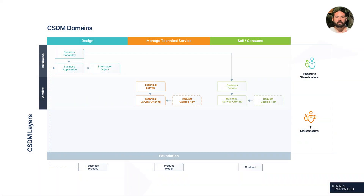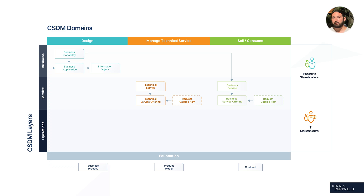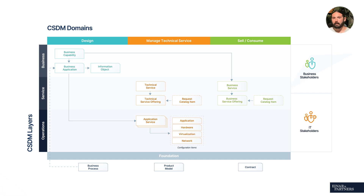Understanding service offerings helps align the services provided with the specific requirements of different business units and operational teams. These offerings also create a bridge to the next layer, the operations layer. This layer focuses on deployment, management and daily operations of IT services, ensuring they are reliable, secure and efficient. Operational CMDB records are extensive but can be categorized — though not limited to — the following parent classes: application service, application, hardware, and virtual machine object.